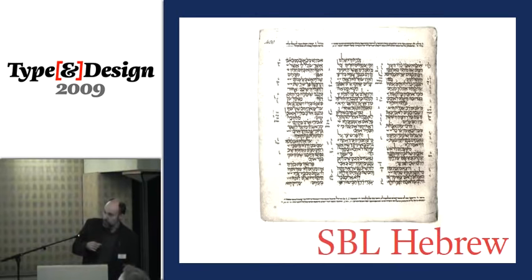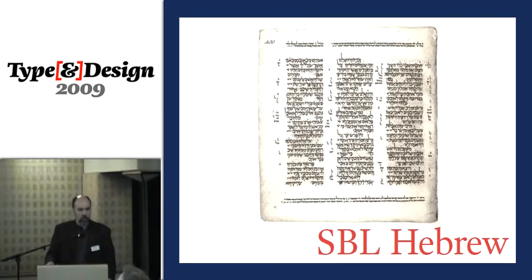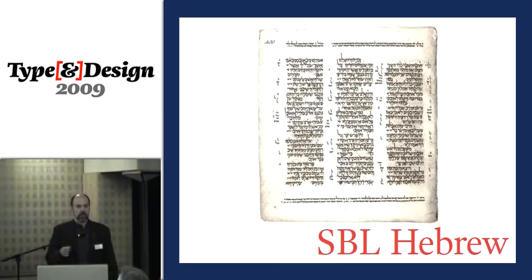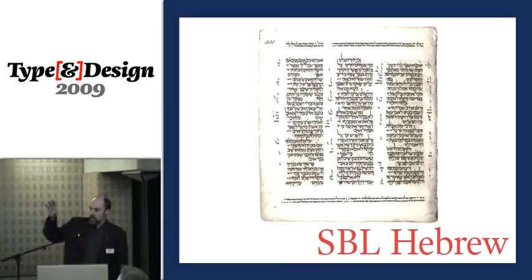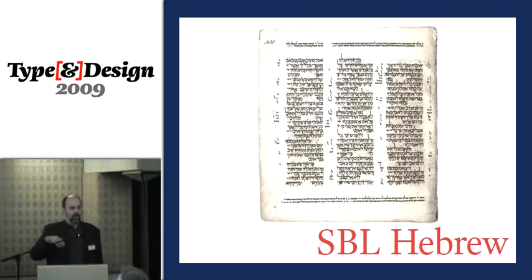This is a facsimile of a page from the Leningrad Codex, the oldest complete surviving manuscript of the Hebrew Bible — what is known as the Masoretic Text. It dates from around the year 1000 AD. As you can see, there are three columns of main text with various things in the margins around them. I'm just going to look at the main text and the challenges within that of displaying this text correctly.